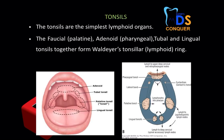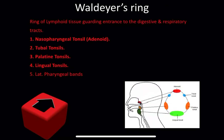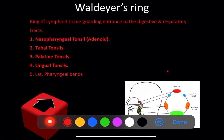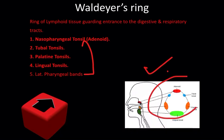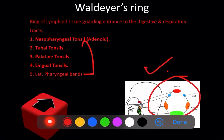Coming to the tonsils, these are also lymphoid organs important in the orofacial region. We know the Waldeyer's ring — this diagram must be included. Waldeyer's ring includes the tubular tonsils, nasopharyngeal tonsils or adenoids, palatine tonsils, lingual tonsils, and the lateral pharyngeal band. You have to draw this diagram, as it is very fetching in an essay answer.